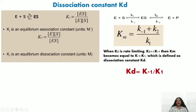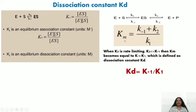When k₂ is rate-limiting it is very slow, and you can ignore the k₂ value. The formula then becomes k₋₁/k₁, and Km equals k₋₁/k₁. At that point the Michaelis-Menten constant becomes the dissociation constant Kd, which equals k₋₁/k₁.